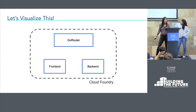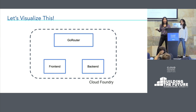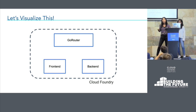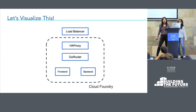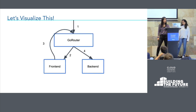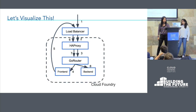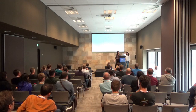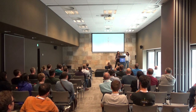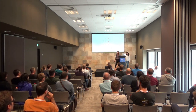This is further complicated by the fact that while we've been looking at the Go router, front end, and back end as the only components, they're only part of our cloud boundary topology. We also have to contend with other parts of the routing tier — such as the HA proxy and load balancer. So instead of there being only four network connections, we have to consider up to eight or more. That's a lot more places where the error could actually be occurring.